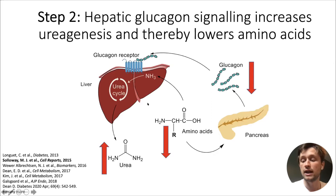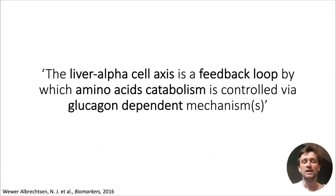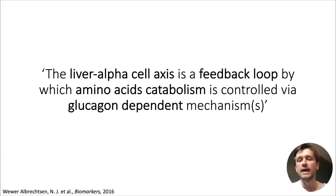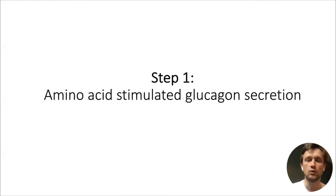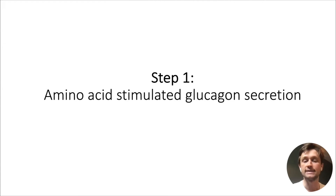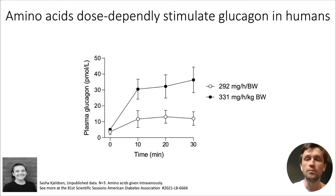This is how it looks in healthy individuals and healthy mice. To phrase it very shortly, the liver-alpha cell axis is a feedback loop by which amino acid catabolism turnover is controlled by glucagon-dependent mechanisms. The first step to understand this intraorgan feedback is to see that amino acids stimulate glucagon secretion.